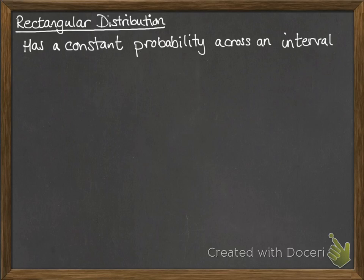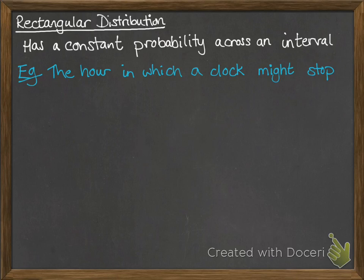So this is where you have a constant probability across a given interval. So for example, the hour in which a clock might stop.